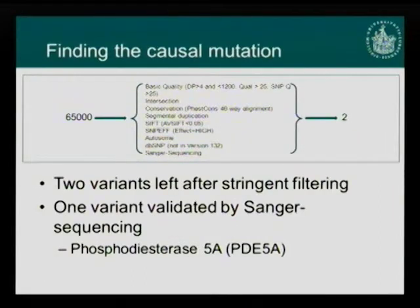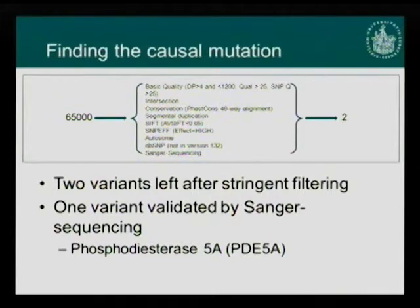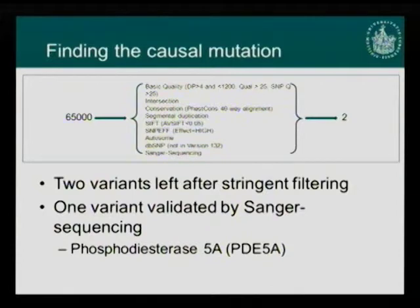Applying the same filter criteria, we were left with two variants, and only one could be validated by Sanger sequencing. This is a variant in the phosphodiesterase 5A gene, which is a very plausible candidate gene for myocardial infarction.